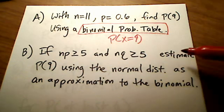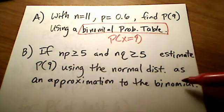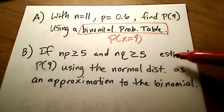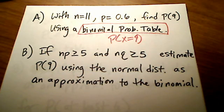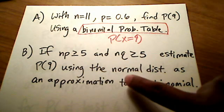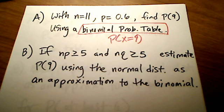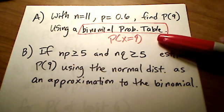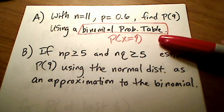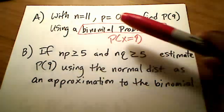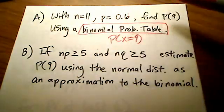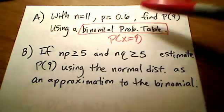Part B has a little bit more to it. We're going to need the idea of continuity correction to use a normal distribution to approximate the binomial. But let's first figure out how part A works with n equal to 11 and probability of success equal to 0.6.